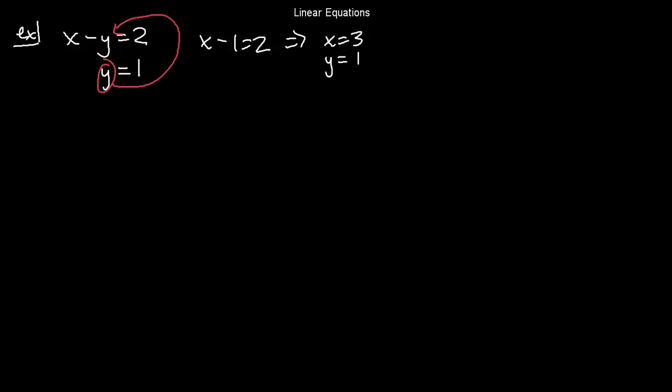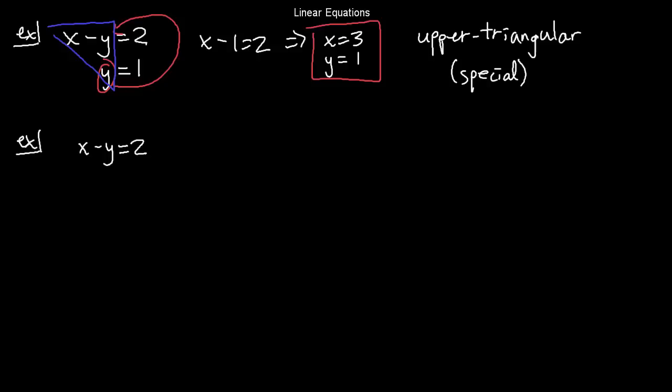What was important about this is that the system of equations was in a special form called upper triangular. In fact, this upper triangular system is called special upper triangular, and that's because the coefficients of the triangle, and I'll draw the triangle here in a sec, are 1. 1x minus y is 2, and 1y equals 1. And we'll show you an example where that's not the case. It's going to be an equivalent system: x minus y equals 2, and 2y equals 2. So again, y has to be equal to 1, and you see this triangle.